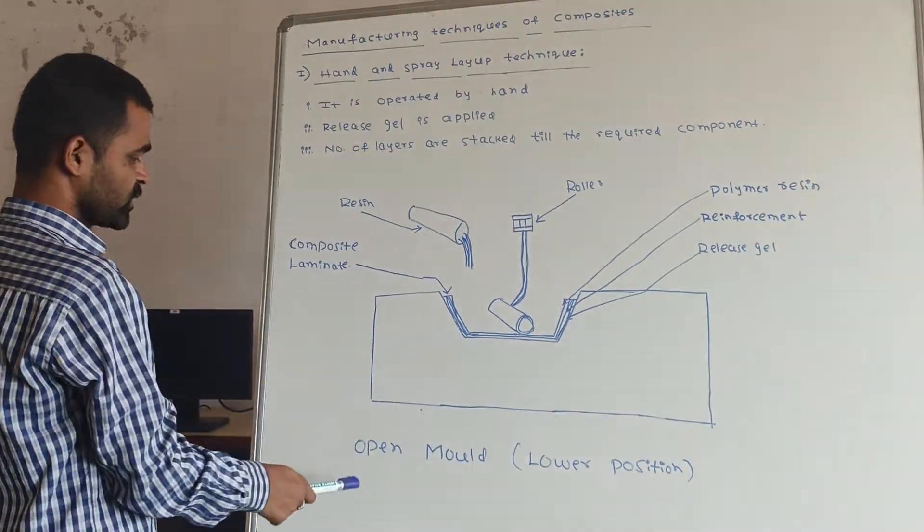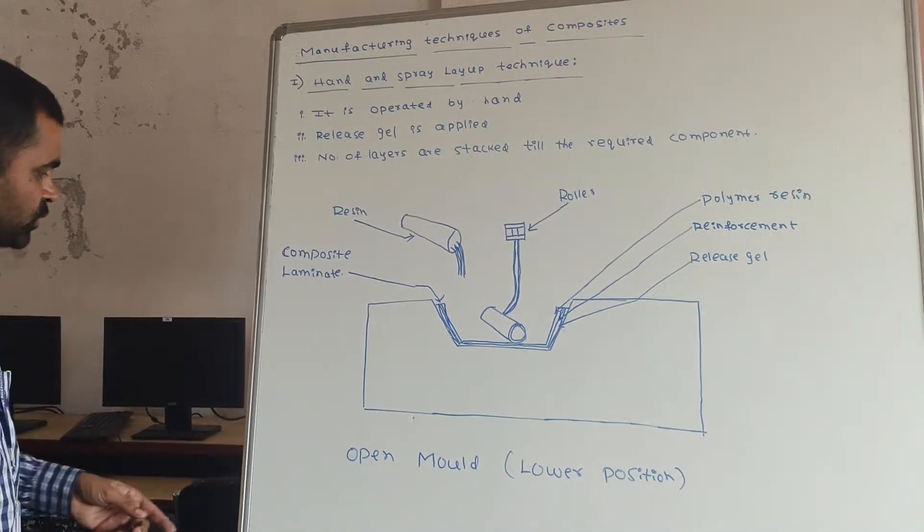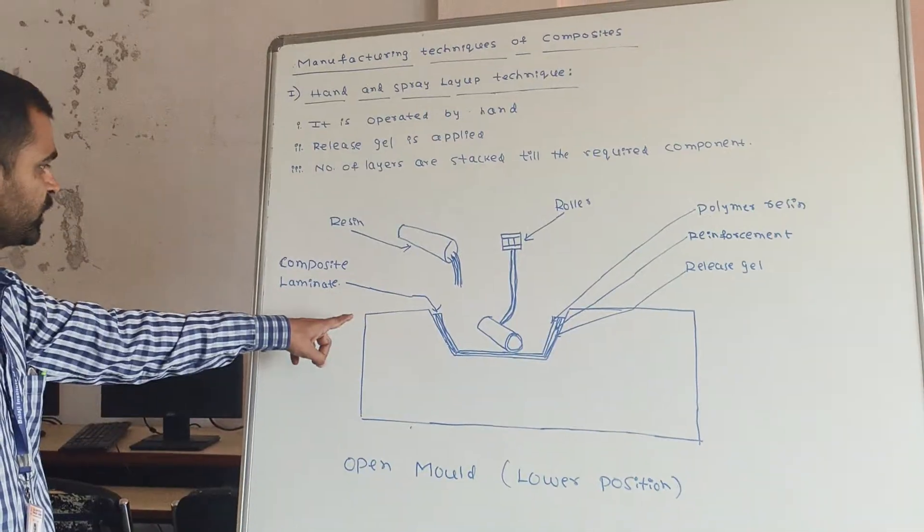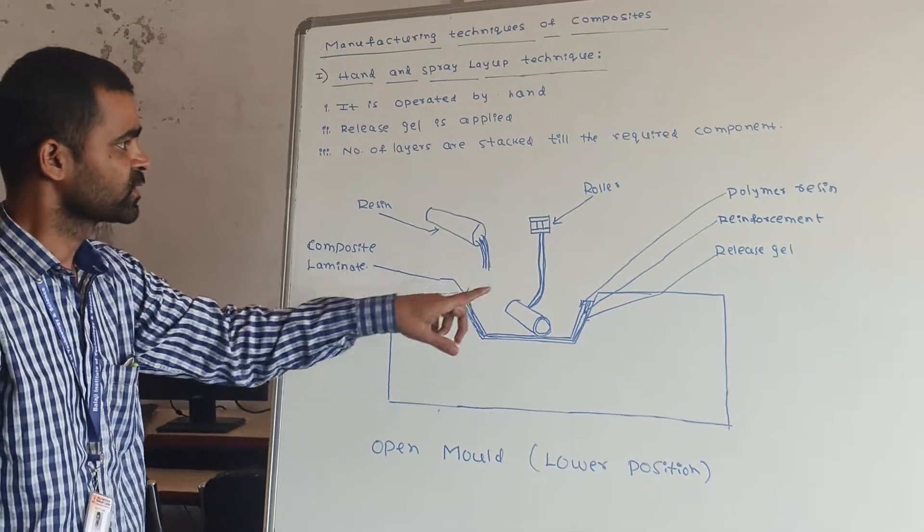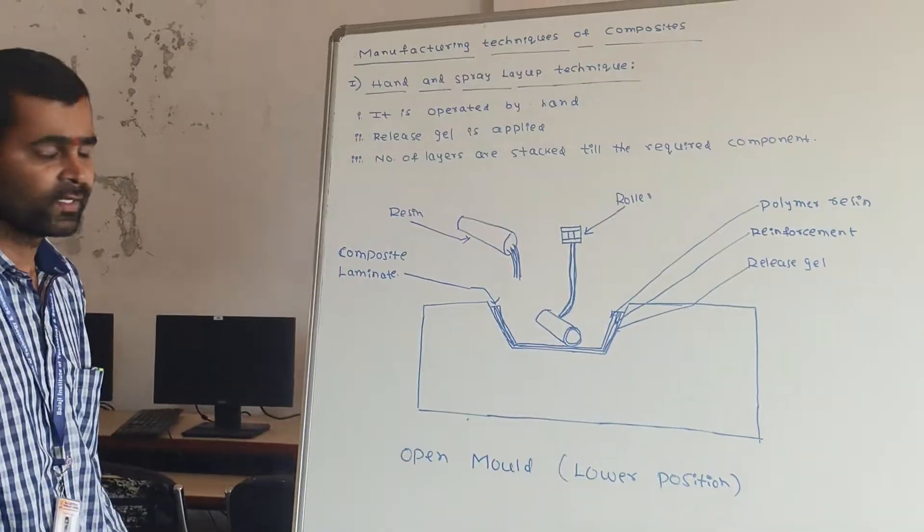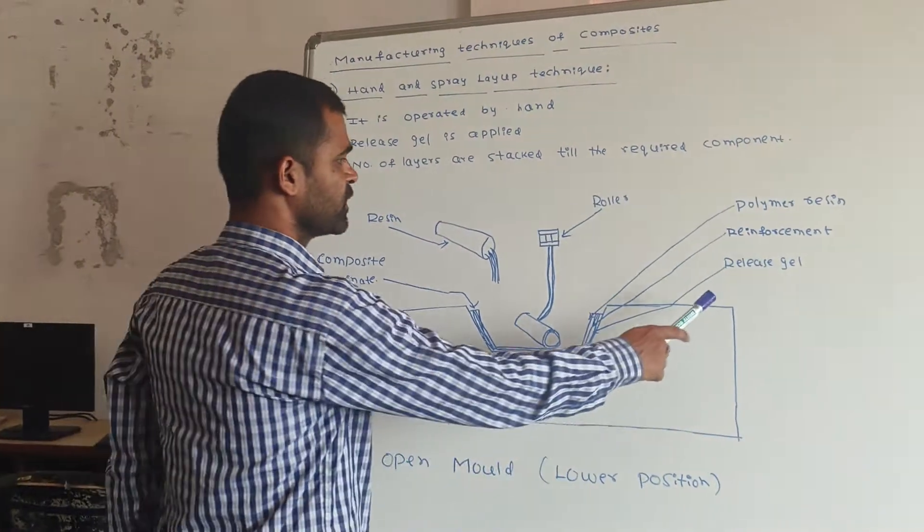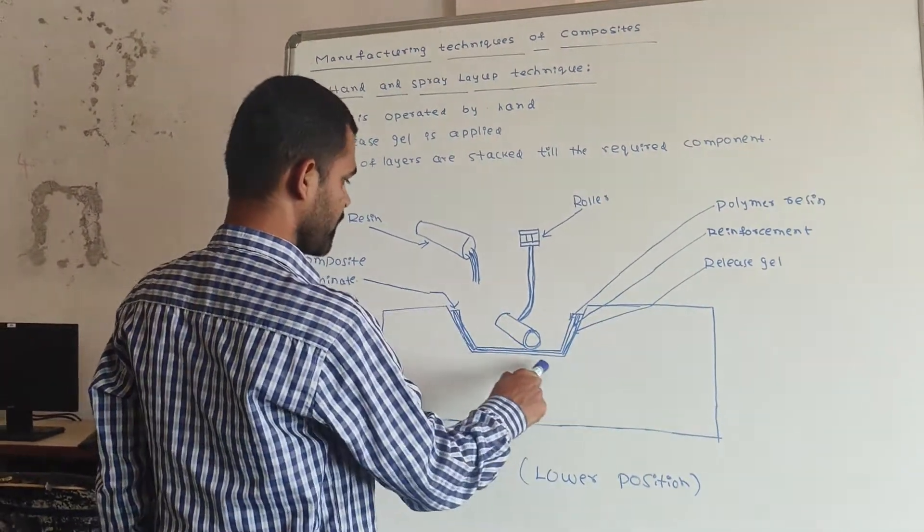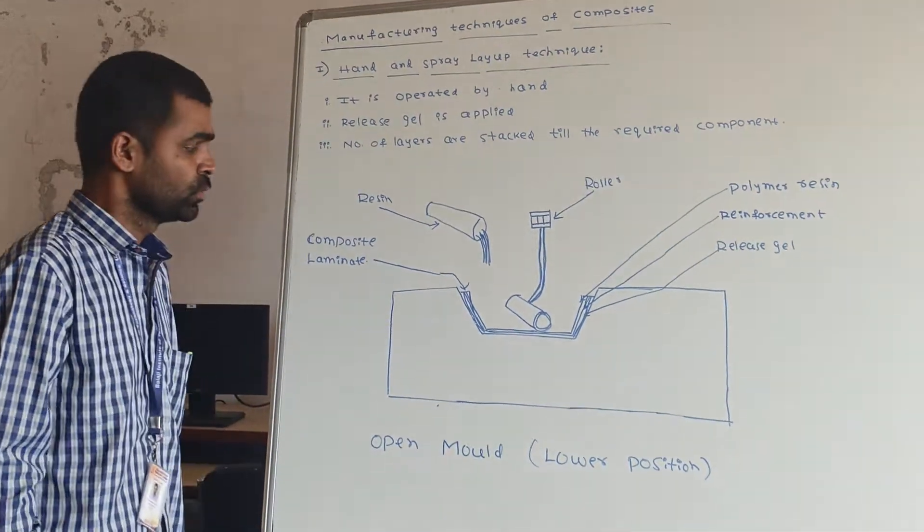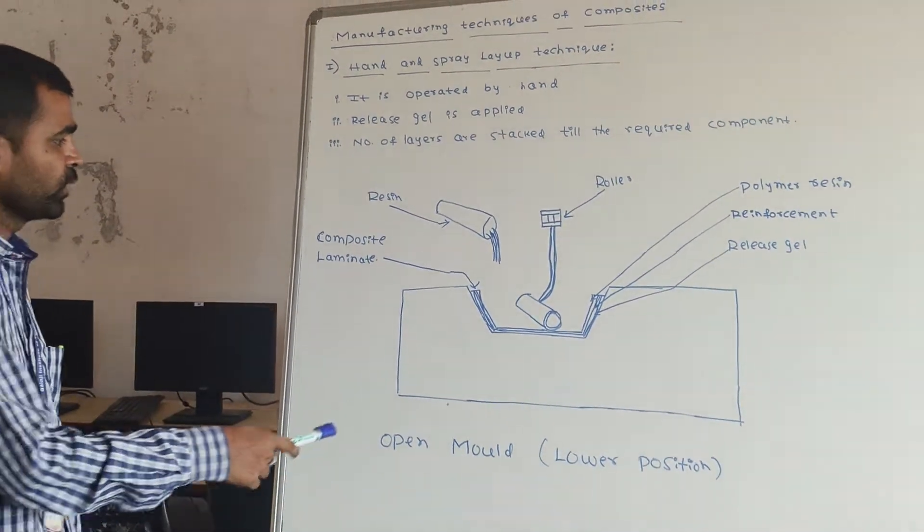So you can see the mold. This is the open mold. In this, the resin is poured in layers. But before that, a release gel is applied on the surfaces of the mold. And then the resin is poured in layers.